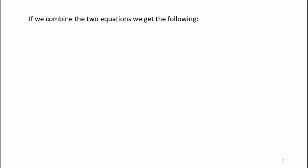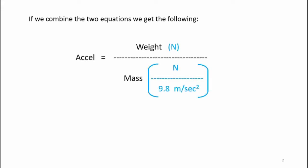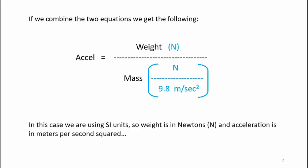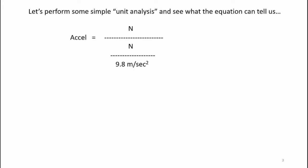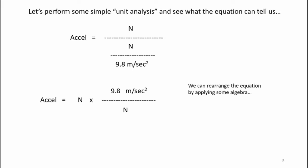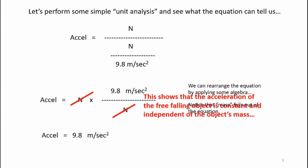Now if we combine these two equations, we get the following. Here's the acceleration equation: weight divided by mass. Looking at the units, I have weight in newtons and mass is newtons divided by 9.8 meters per second squared — we're using SI units here. Applying simple unit analysis and rearranging: acceleration equals newtons times 9.8 meters per second squared divided by newtons. If I cancel the newtons from the equation, acceleration is equal to 9.8 meters per second squared. The forces fall out of the equation, which also means the mass falls out of the equation. This shows the acceleration of a free-falling object is constant and independent of an object's mass.